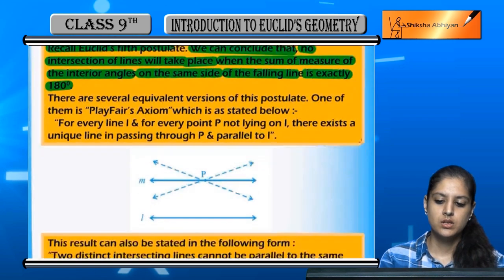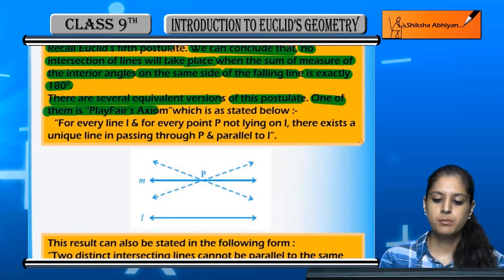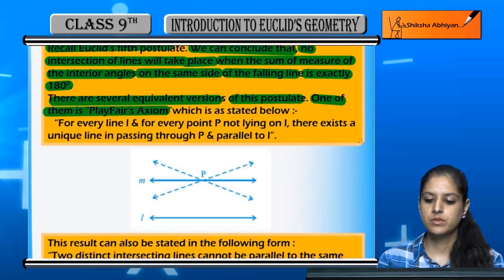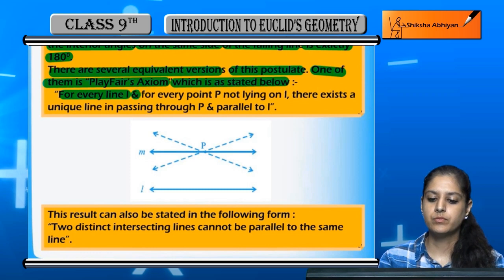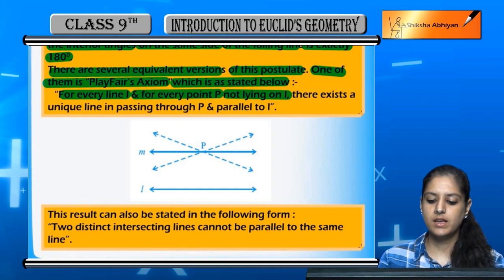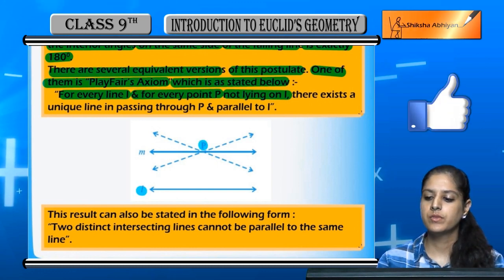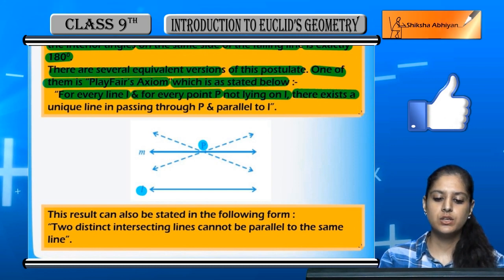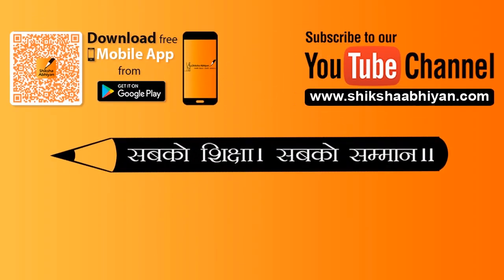So there are several equivalent versions of this postulate. One of them is Playfair's axiom, which is stated as: for every line L and for every point P not lying on L, there exists a unique line passing through P and parallel to L.